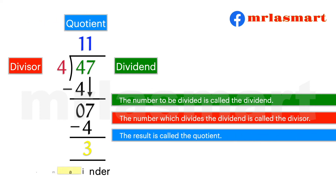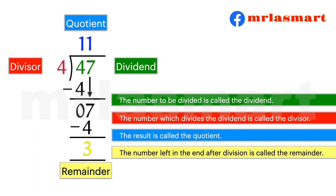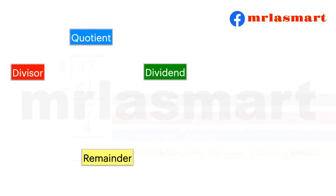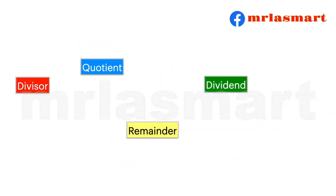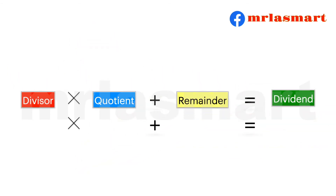The number left in the end after division is called the remainder. Divisor multiplied by the quotient, plus the remainder, equals the dividend.